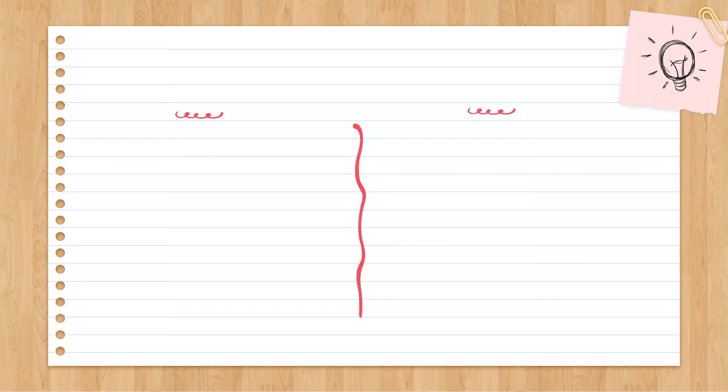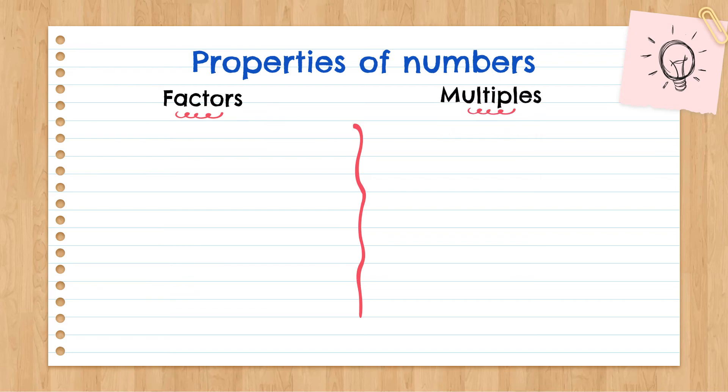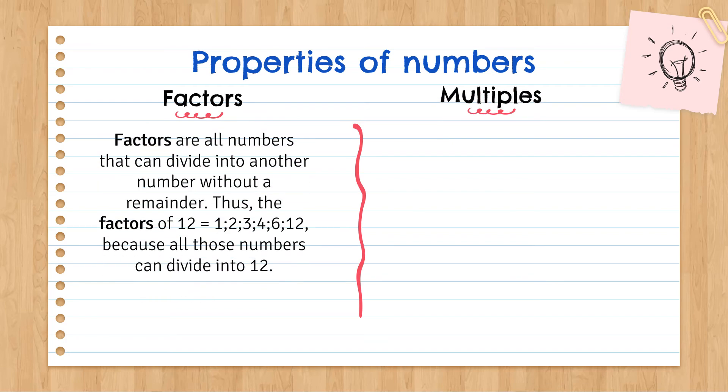The last part of this chapter of properties of numbers, we are going to look at factors and multiples. Factors are all numbers that can divide into another number without a remainder. Thus, the factors of twelve are one, two, three, four, six and twelve. Because all of those numbers can divide into twelve. We write this as F12, open the bracket, one, two, three, four, six and twelve and we close the bracket.